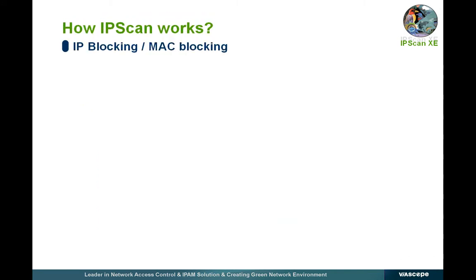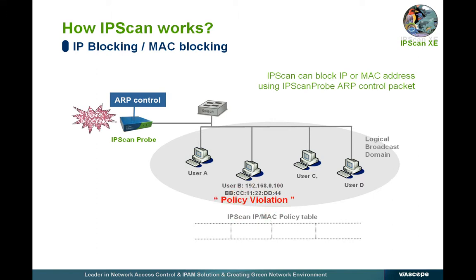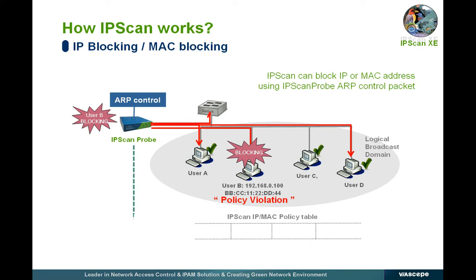Let me explain how IP scan blocks access from a certain user. If a certain PC violates a specific policy or the administrator blocks a certain user, the IP scan probe is instructed to block access from that user immediately. For example, if user B changes the IP at their discretion or violates a defined network policy, the probe promptly changes the network address of B known to all other network devices in the same broadcast domain, resulting in isolation of B from the network.